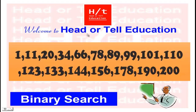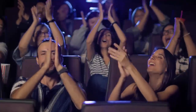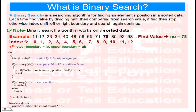Hello friends, welcome to Head or Tail Education. Today our topic is binary search. Binary search is a searching algorithm for finding an element's position in a sorted data. Each time it finds a value by dividing in half, then comparing with the search value. If found, stop; otherwise, shift the index left or right boundary and search again.